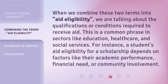When we combine these two terms into 'aid eligibility', we are talking about the qualifications or conditions required to receive aid. This is a common phrase in sectors like education, health care, and social services. For instance, a student's aid eligibility for a scholarship depends on factors like their academic performance, financial need, or community involvement.